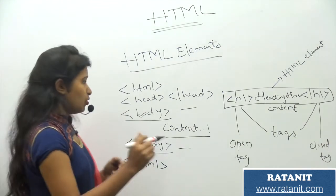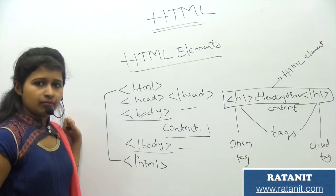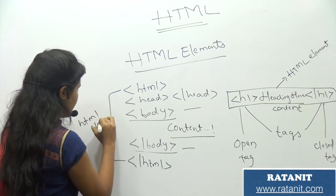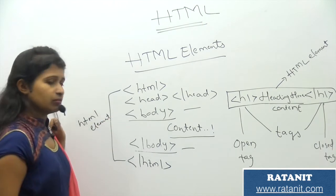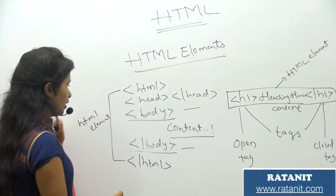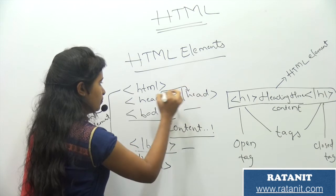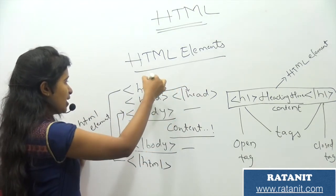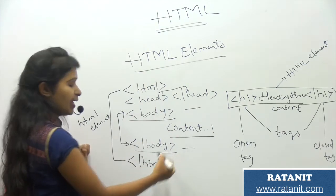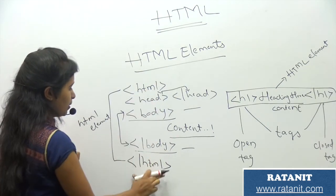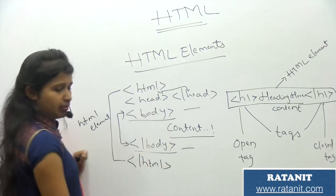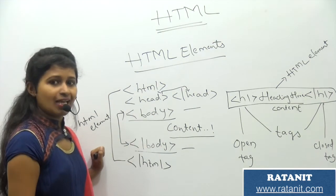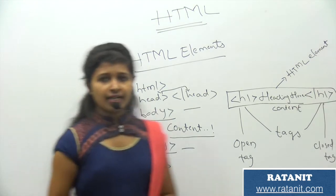See over here — I have an HTML element, and inside it I have another element, and inside that I have one more element. That means an element inside an element. Inside the HTML element I have my body element. We call this a nested HTML element.